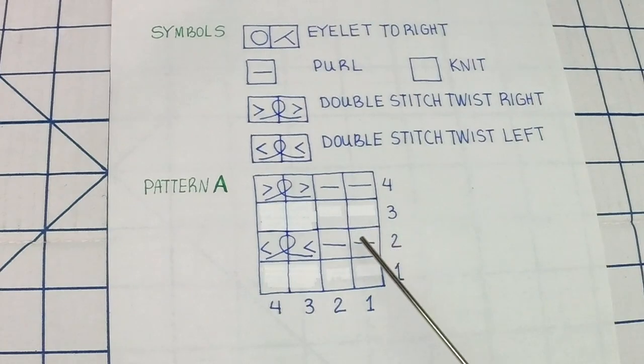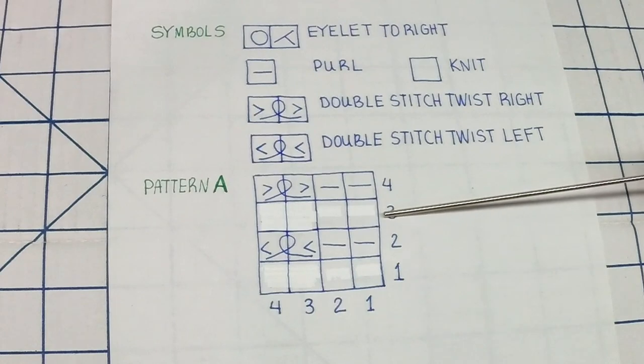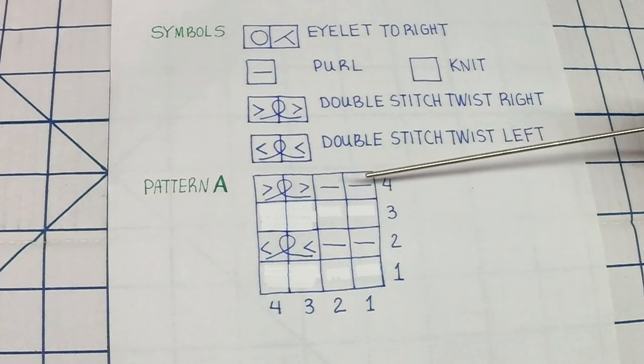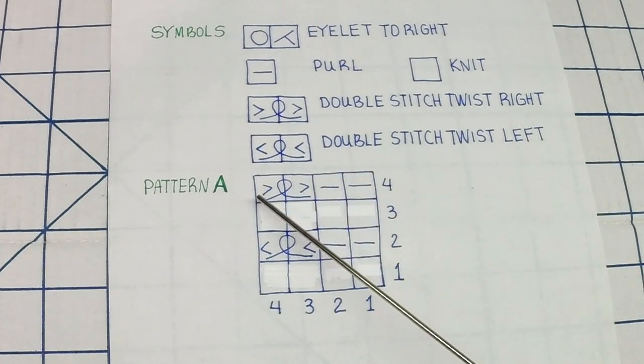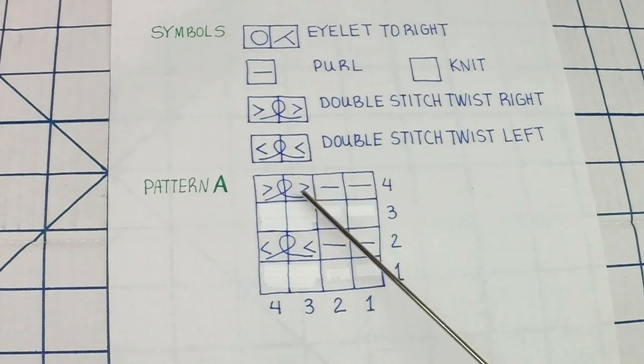Second row we're going to be purling two stitches, double twisted stitch with the transfer tool rotating to the left. Row three we're going to knit. Row four purl two stitches, double twisted stitch, transfer tool rotating to the right.